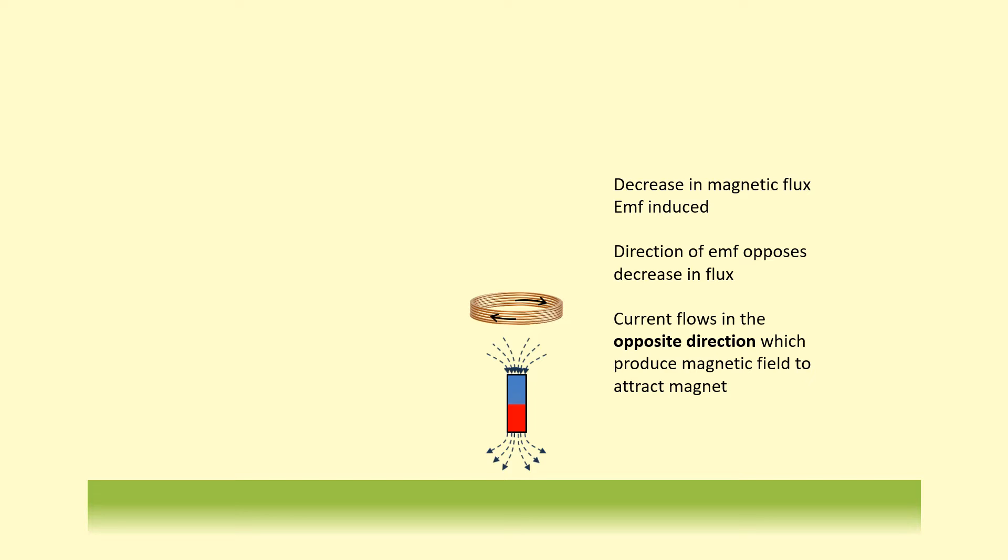So the current is now actually flowing in the opposite direction. And that produces its own field like so, trying to almost recreate the field that it's losing. And the net effect of this will be to actually attract the magnet back up. So we have to always think of the coil as something that hates change. Before it didn't like the increase in flux. Now it doesn't like the decrease in flux.